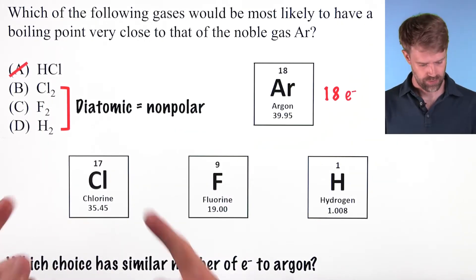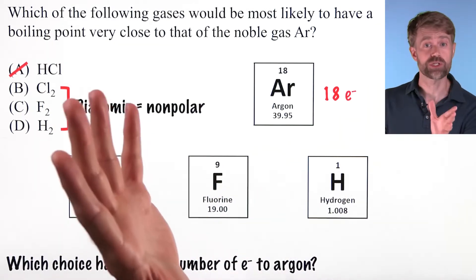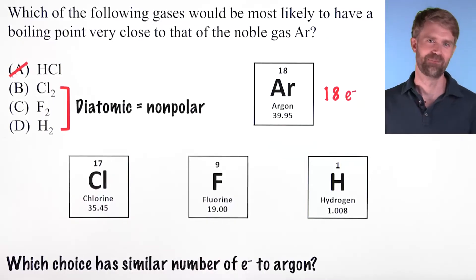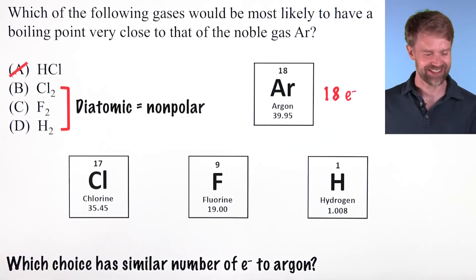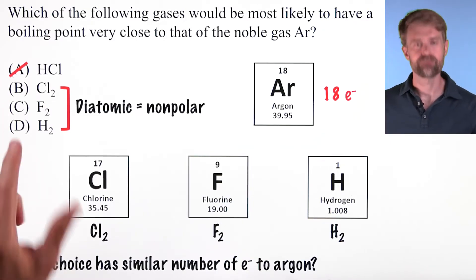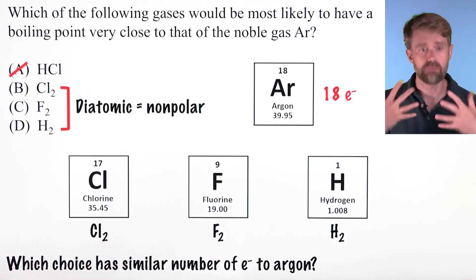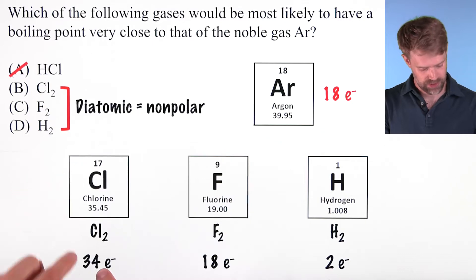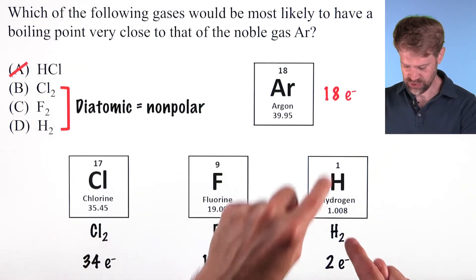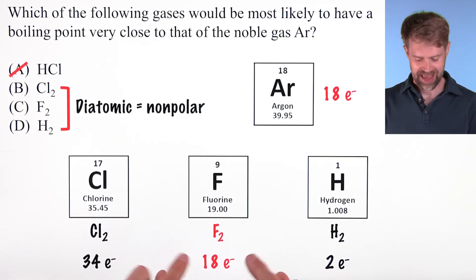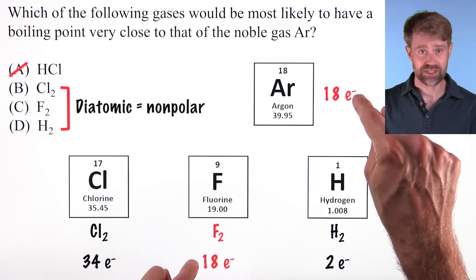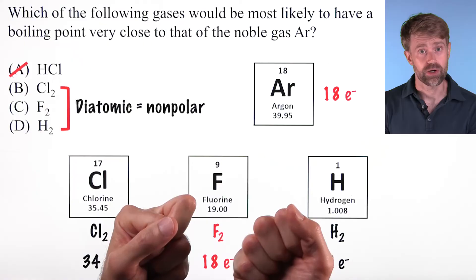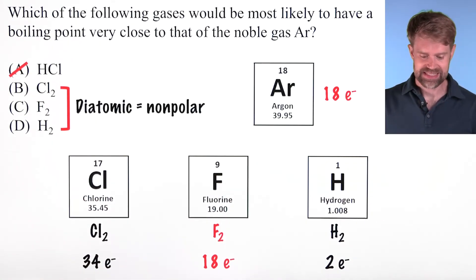Let's count up the electrons for chlorine, fluorine, and hydrogen. You may be tempted to say chlorine has atomic number 17 — 17 electrons, closest to 18 — but this is a great example of the AP test trying to trick you. These aren't atoms; they're diatomic elements, meaning each particle is a molecule of paired atoms: Cl2, F2, and H2. So Cl2 has 34 electrons, F2 has 18 electrons, and H2 has 2 electrons. There's our magic number — 18 electrons for F2 matches the number of electrons in argon, so F2 and argon are very likely experiencing similar London dispersion forces.